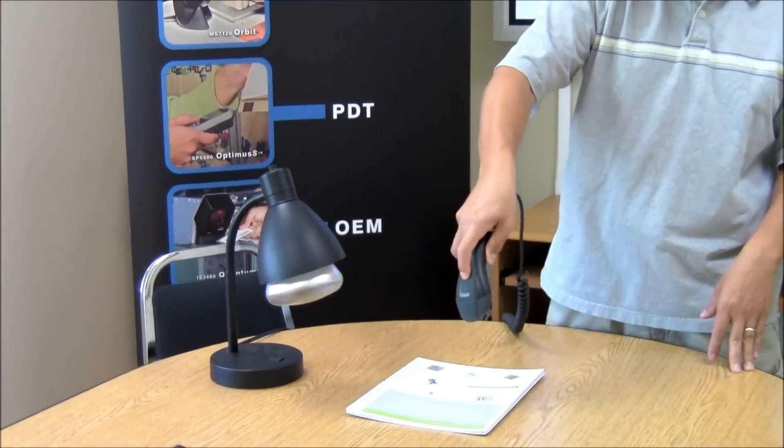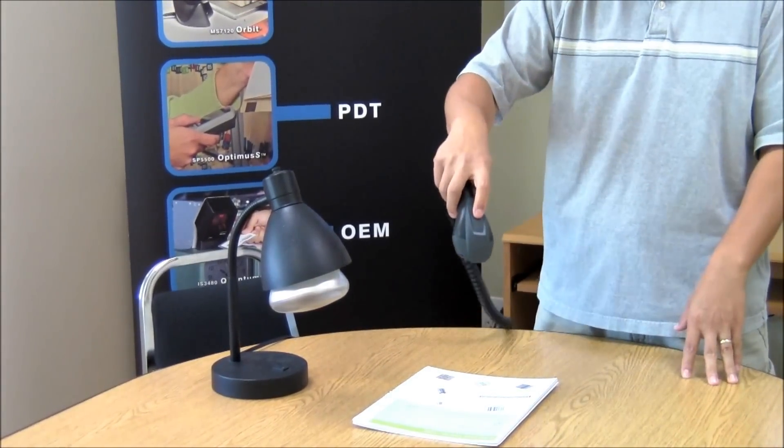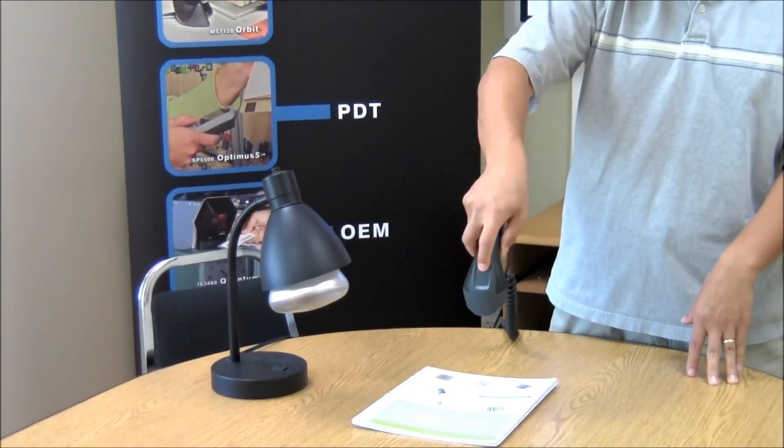In the older Voyager, you have to be lined up across the bars. This one you can scan at all kinds of angles.